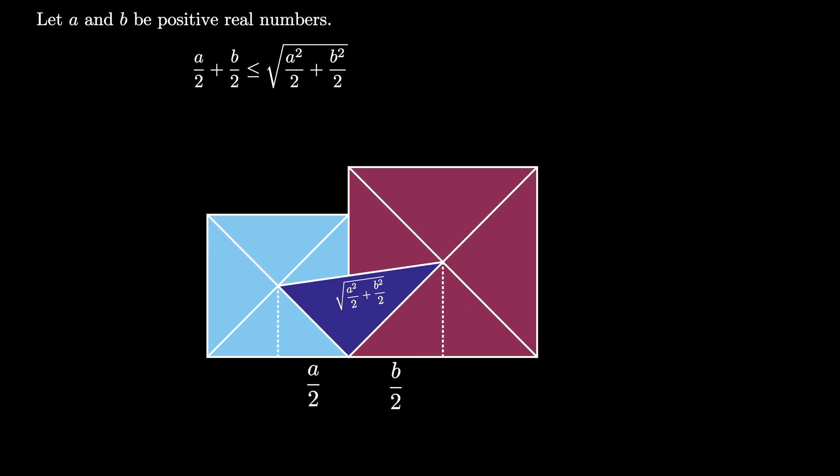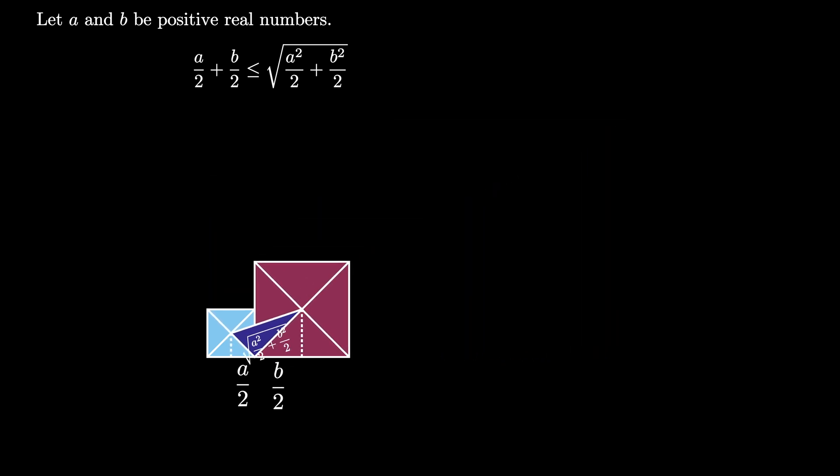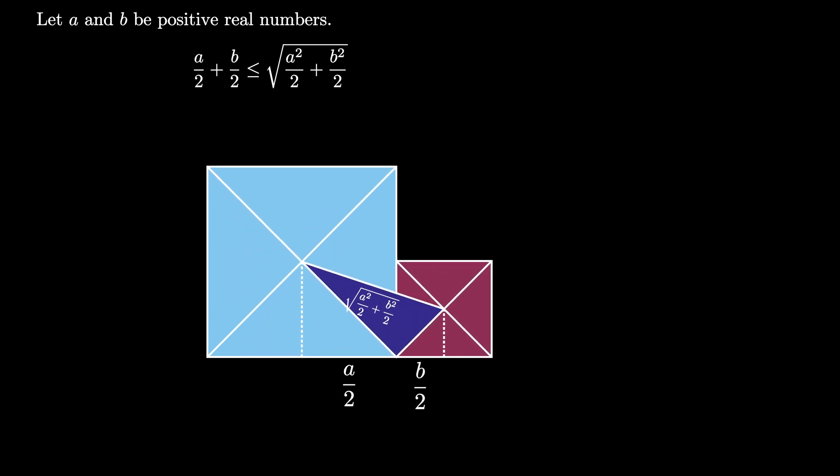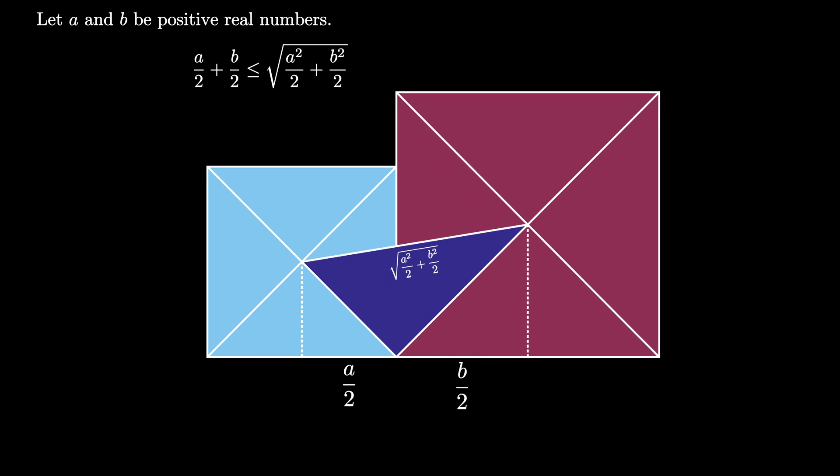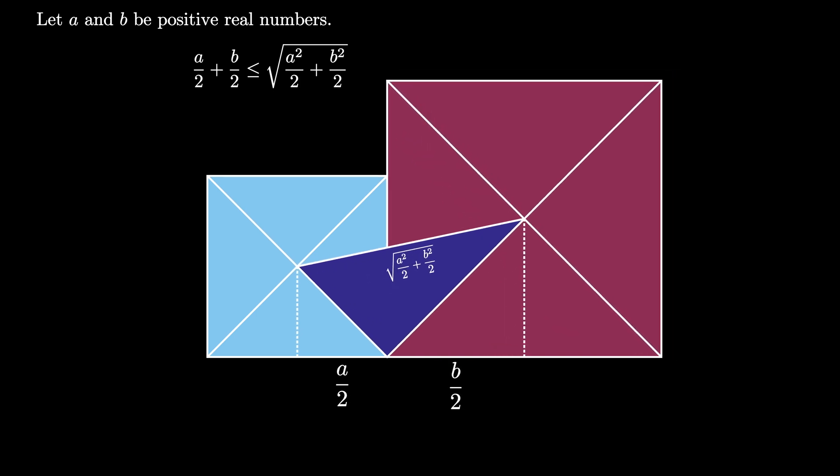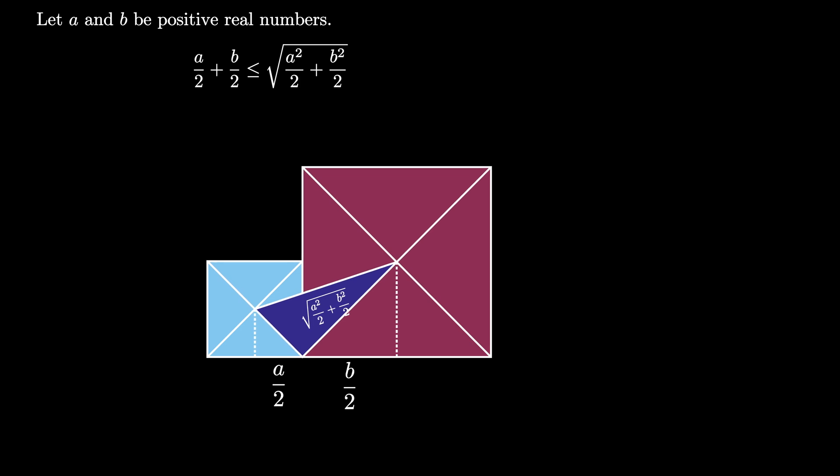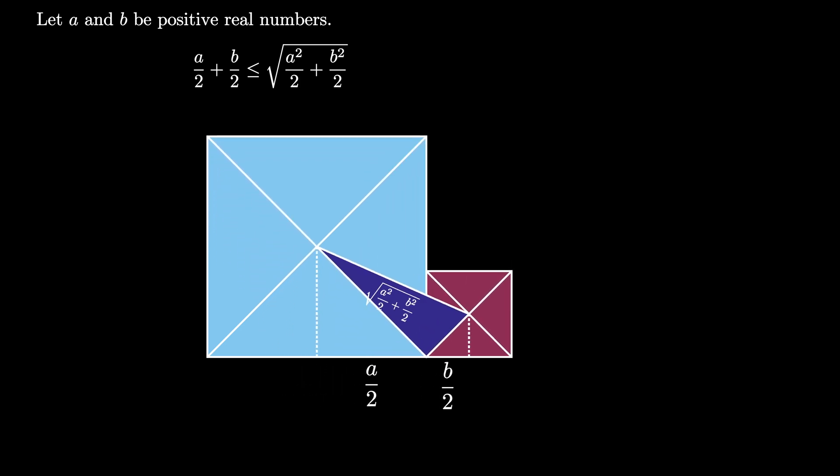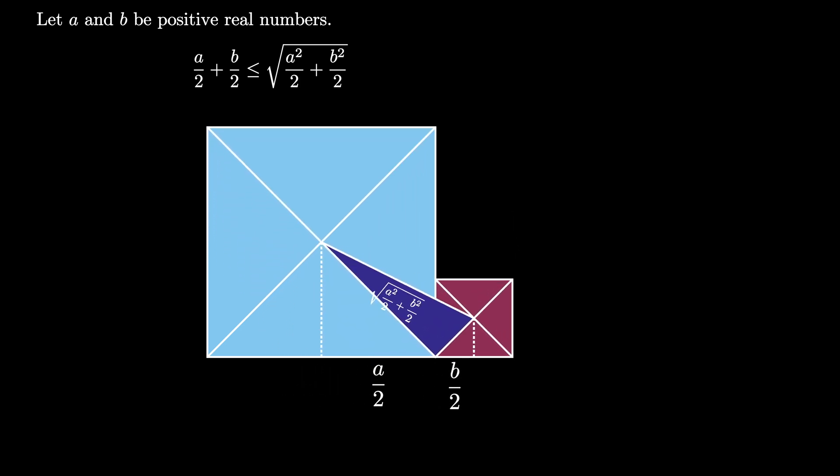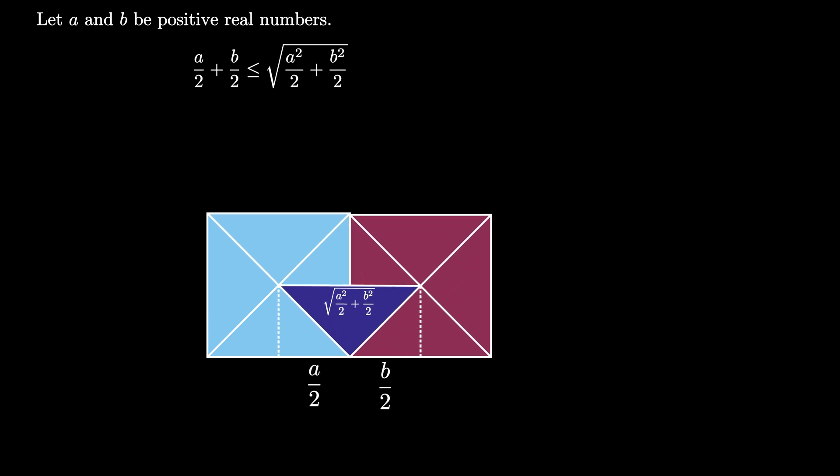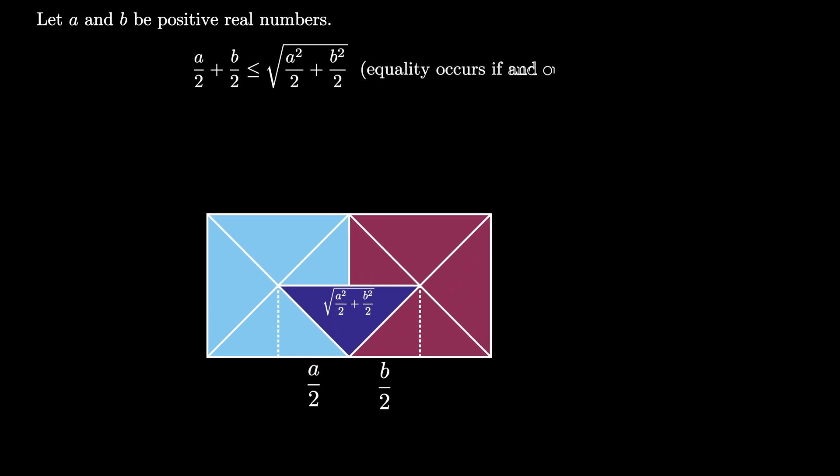No matter the sizes of A and B we see that we can always create this diagram with an A by A square and a B by B square and a triangle connecting their center points. This triangle is part of a trapezoid and the trapezoid has one long side and one short side so the inequality is always strict except in the one situation where the side length A equals the side length B.